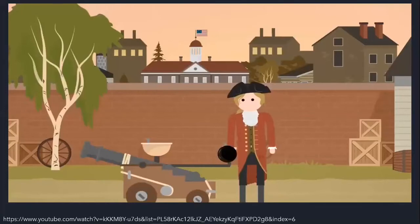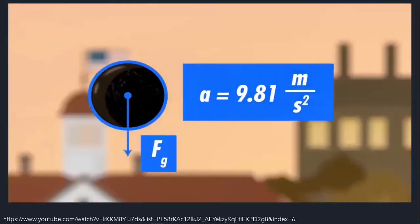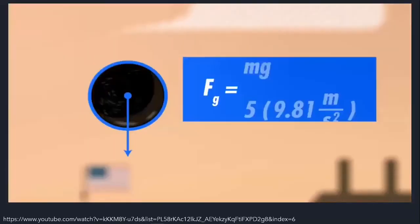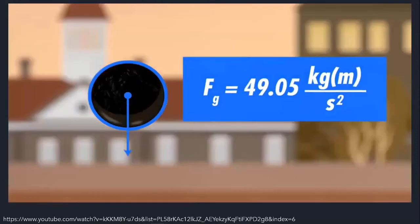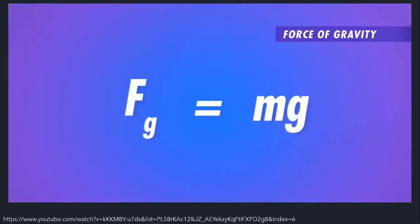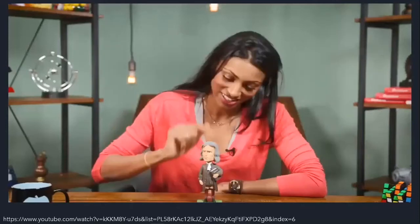The most common case of net force is gravity. A 5 kg ball thrown upward accelerates downward at 9.81 m/s². Using F net = ma, the force of gravity equals mass times g, so Fg = 5 kg × 9.81 = 49.05 N. We use Fg = mg so often it's a standard equation. This is weight. Those units are called newtons, in honor of Sir Isaac — so we measure weight in newtons, not kilograms. Kilograms measure mass.